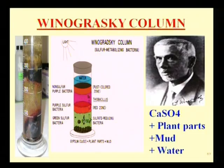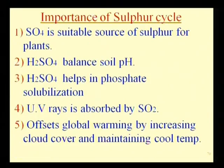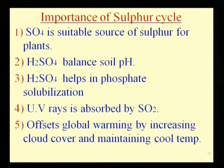The importance of the sulfur cycle: sulfate is an important source of sulfur for plants. H2SO4 helps balance soil pH and aids in phosphate solubilization. SO2 absorbs UV rays. The sulfur cycle also offsets global warming by increasing cloud cover and maintaining cooler temperatures.